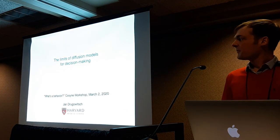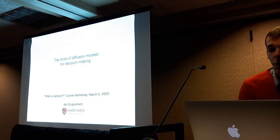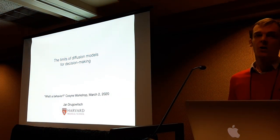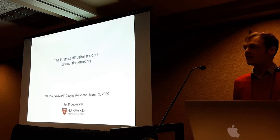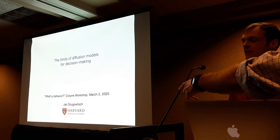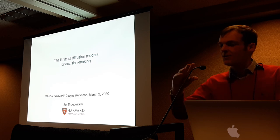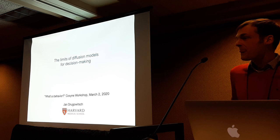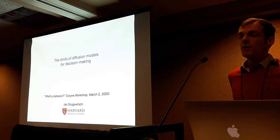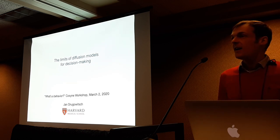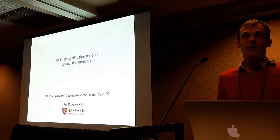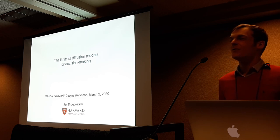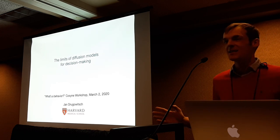I'm going to talk about the limits of diffusion models for decision-making. Why would you care about this? Diffusion models have crystallized themselves as a go-to model in systems neuroscience and decision neuroscience, and they turned out to fit a lot of behavior really, really well. What I want to ask today is, are they actually meeting the ecological demands of natural behavior? I will argue no, they don't — but I will also try to convince you that in most cases, that doesn't actually matter, because they're still good enough.